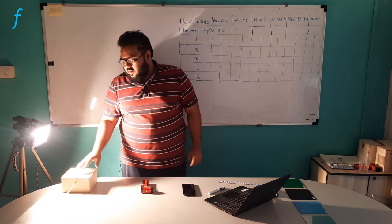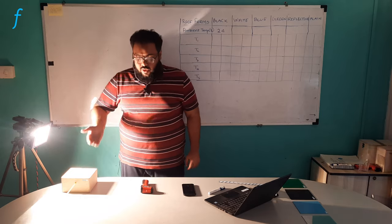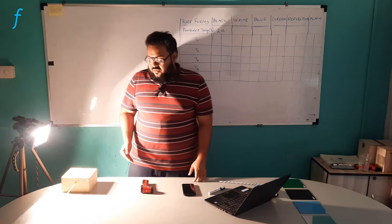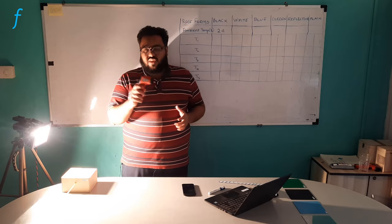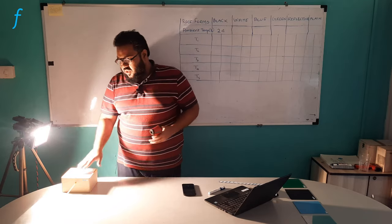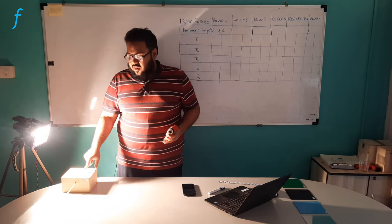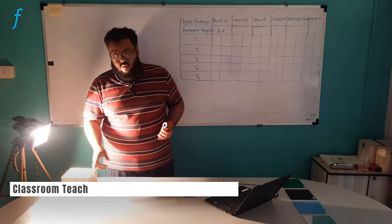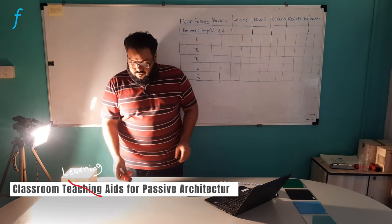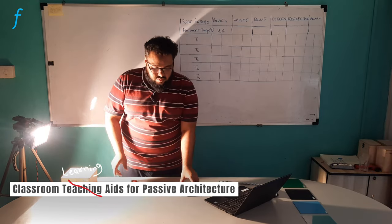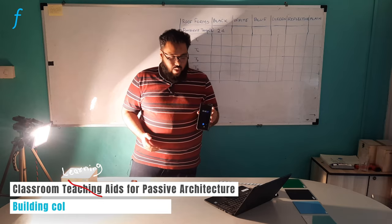As you can see, the heat from the halogen tube is falling directly on the panel here. Once the heat starts falling, the temperature of this panel will start going up. What we will do after a minute is use this temperature gun to note down the surface temperature of this panel, and also simultaneously we will note down the temperature which is inside the box.